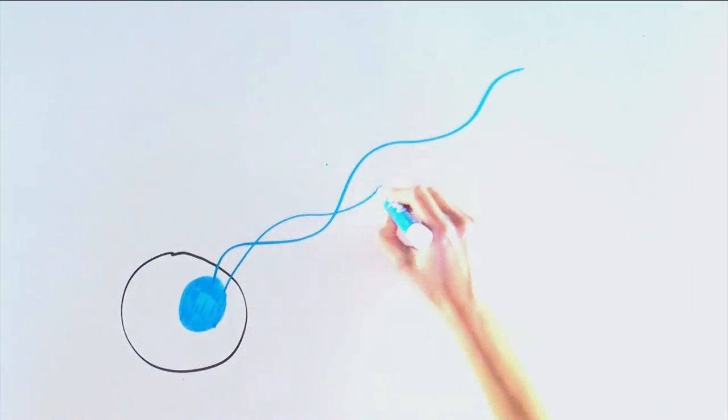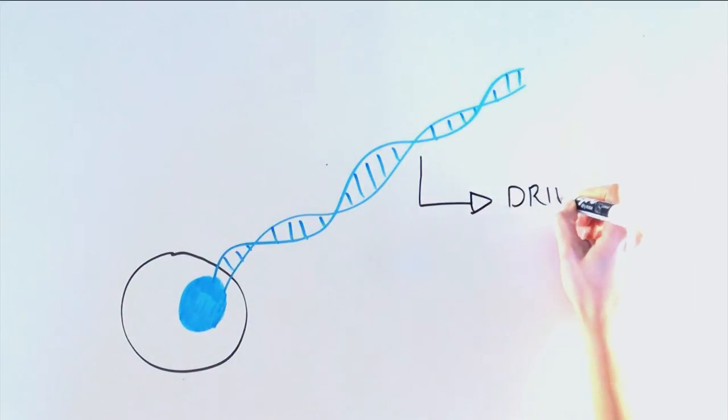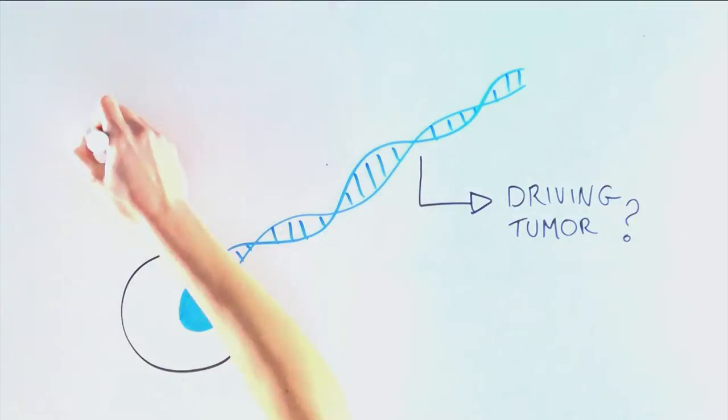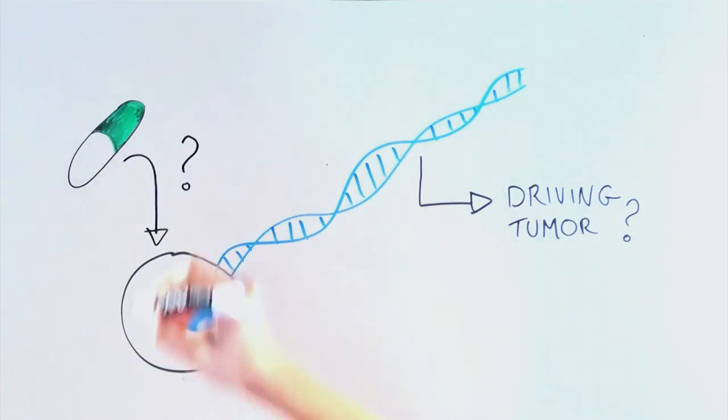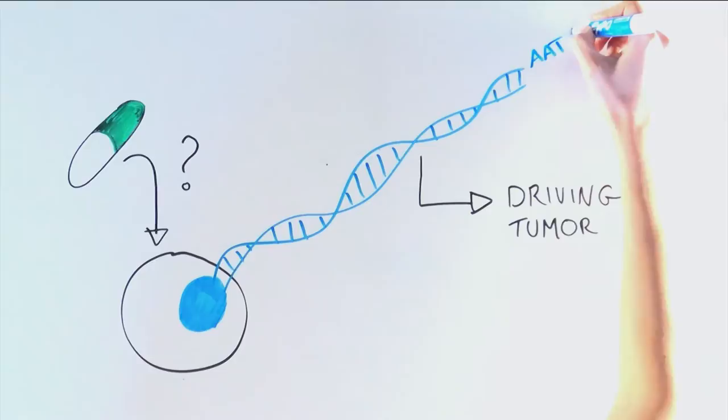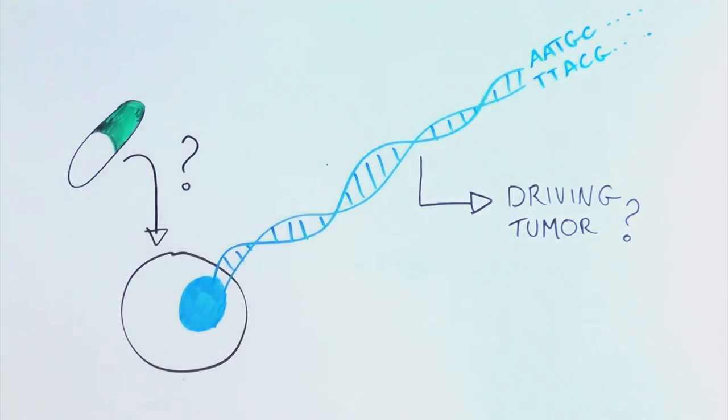The cancer cell DNA can tell us a lot about what is driving the tumor and what types of therapies might be successful to fight it. With new advances in DNA sequencing, we now have vast amounts of information about the DNA sequence of tumor cells.